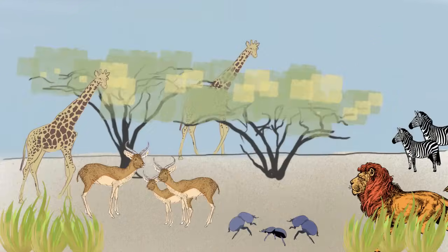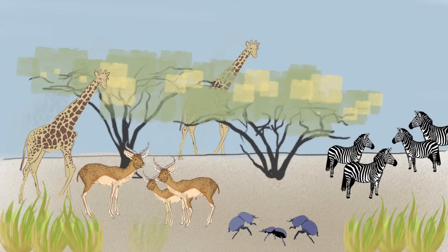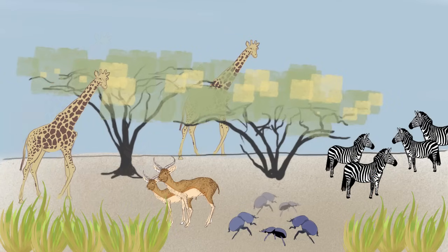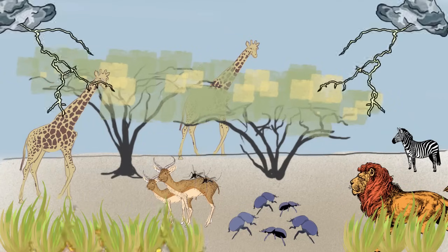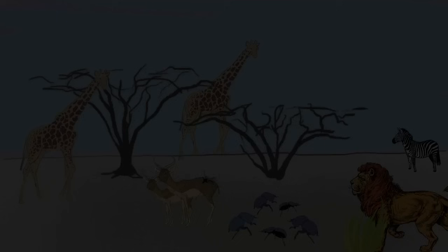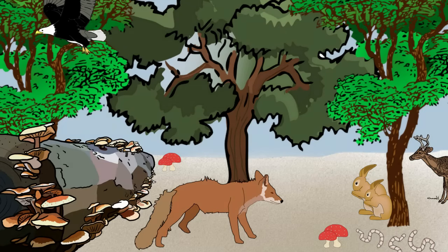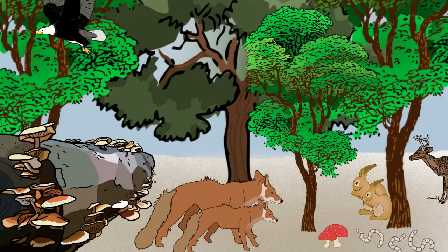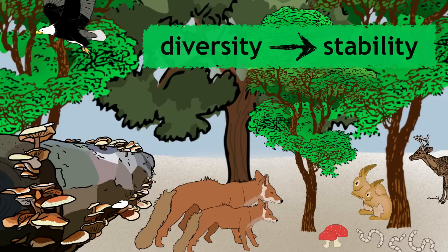Ecosystems are incredibly dynamic, as populations of organisms increase and decrease, and climatic conditions always alter. Some ecosystems can be very stable, in that they change very little over long periods of time. Generally, the more diverse an ecosystem is, the more stable it will be.